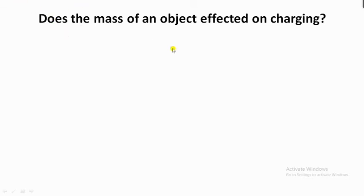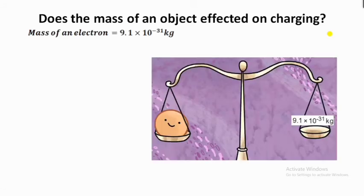Does the mass of an object get affected by charging? The mass of an electron is 9.1 × 10⁻³¹ kg. In order to charge an object, we either give electrons to it or take electrons away from it.